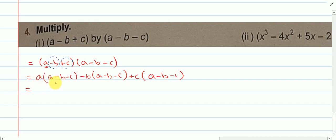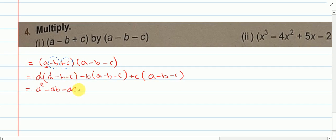Now 'a' will multiply inside the bracket to each term. So a into a: here a to the power 1 and here a to the power 1, base is same and they are multiplying, so power will be added — this becomes a square. Then plus here, minus here, so simply minus: a into b gives ab. Then plus here, minus here, so minus: a into c gives ac.